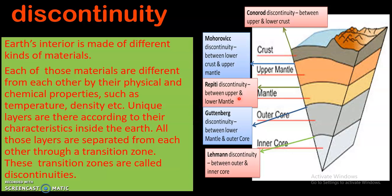It is called Repetti discontinuity or Repetti transition zone. The next is Gutenberg discontinuity. It is a boundary which separates the lower mantle and outer core, or simply it is a boundary which separates the mantle from the core. It is called Gutenberg discontinuity.